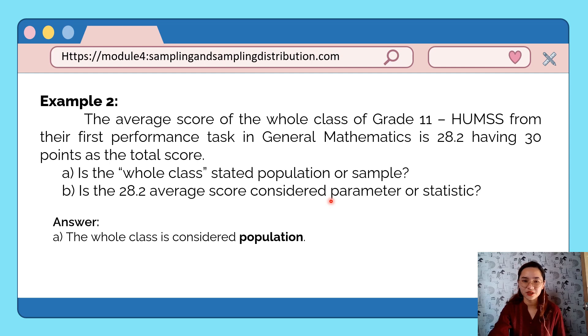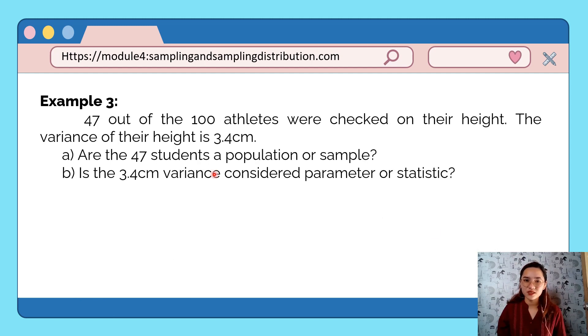Of course, that is considered a population. Is the 28.2 average score considered a parameter or statistic? The 28.2 score is the score of everyone from the population, the whole class, so therefore this is a parameter.